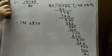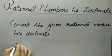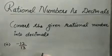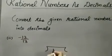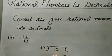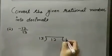Next example. Find the decimal representation of the number minus 12 by 13. Second example I am taking. Decimal representation, divide the numerator with the denominator. 12 is not divisible by 13. So, we will start with the decimal.